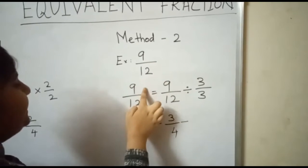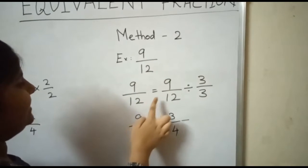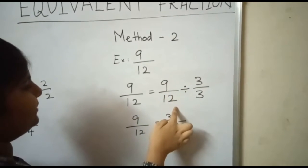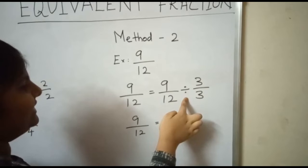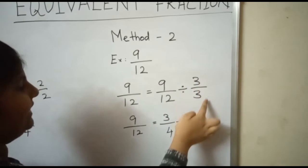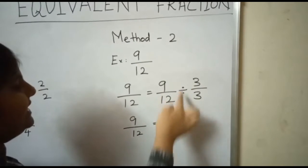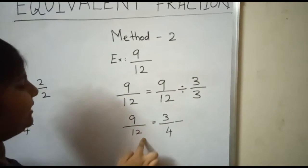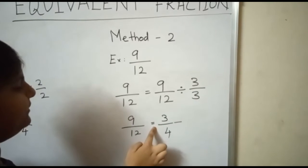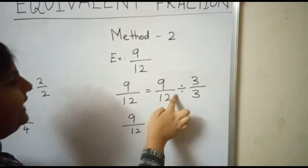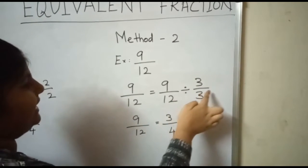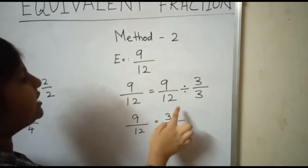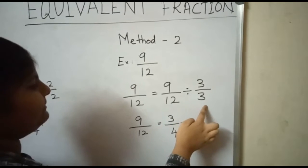Method two example — 9/21. 9/21 — divide the numerator and the denominator by the same number. 9/21 is equal to: 9 divided by 3 is 3, 21 divided by 3 is 7.